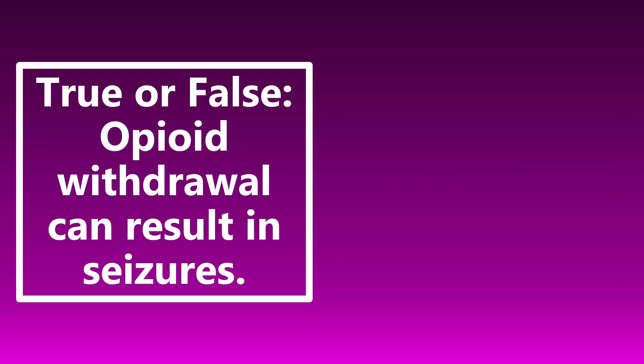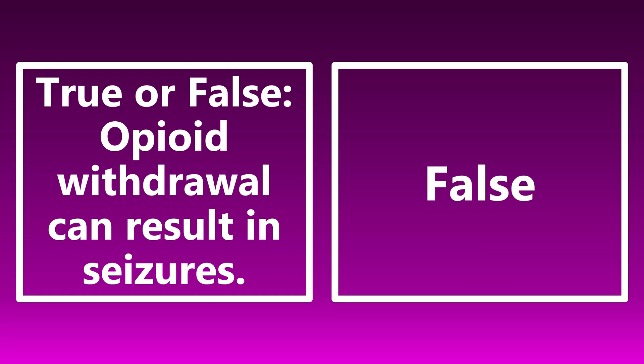True or false: opioid withdrawal can result in seizures. This is false — opioid withdrawal does not result in seizures. While it can be scary with severe symptoms, it is not life-threatening. Clinically, if a patient presents with seizure activity and you suspect withdrawal, you can rule out opioids. Substances whose withdrawal can cause seizures include alcohol, barbiturates, and benzodiazepines — opioids are not on that list.